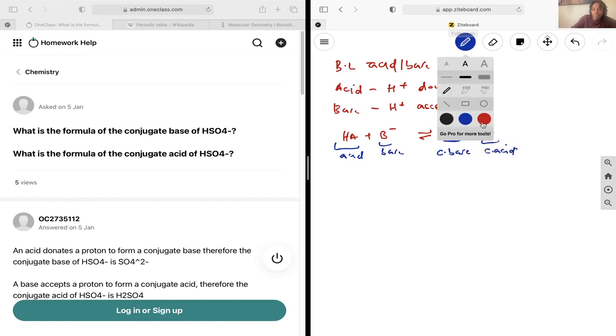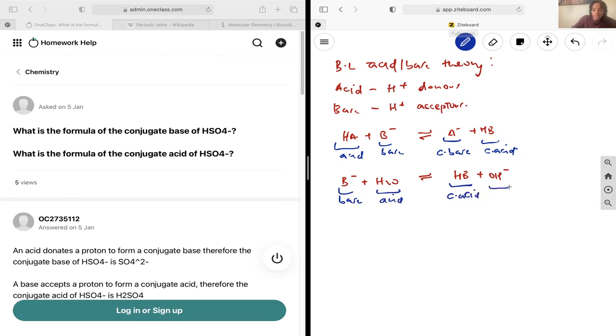If we write out the base version of this equation, we would have B- plus H2O to get you HB plus OH-. Again, label them: this would be your base, water would be acting as your acid, and this would be your conjugate acid and your conjugate base.